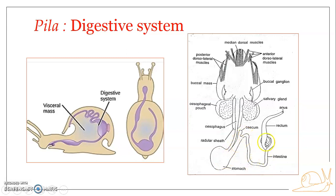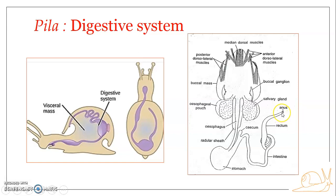Coming to the intestine: it is highly coiled and very long. It runs backward, making two or three coils between the gonad in front and the digestive gland behind, and then opens into the rectum. The rectum is the last part, forming the hindgut proctodeum, and it opens out into the mantle cavity through the anus, located very close to the right side.